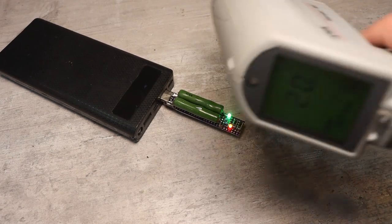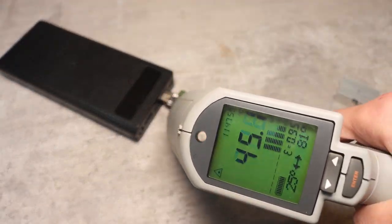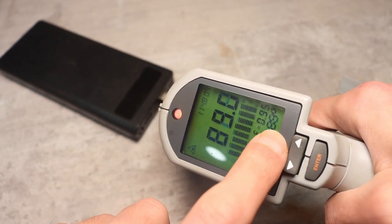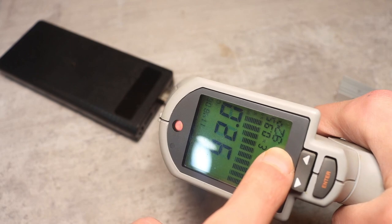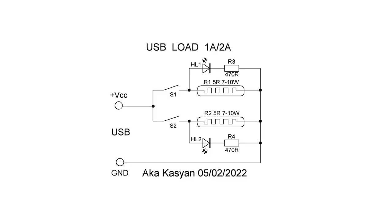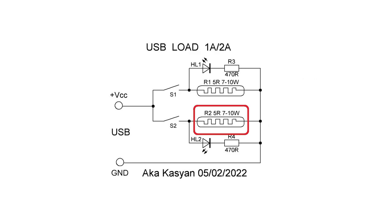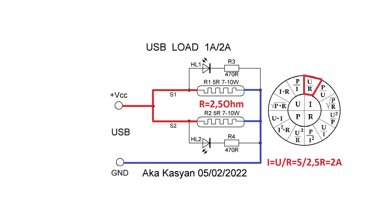It is worth noting that during operation, the resistors will heat up quite noticeably. This probe is a vivid demonstration of Ohm's law in action. Given a port voltage of 5 volts and a load resistor of 5 ohms, the current in the circuit will be about 1 ampere. Adding a second resistor of the same type in parallel will reduce the load resistance by half, therefore the current doubles.